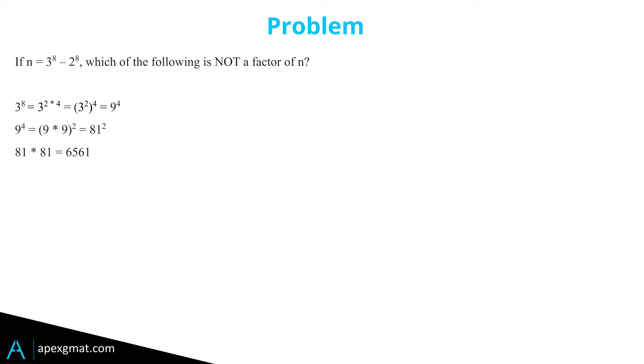Don't expect you to know that. It could be done in 20 seconds on a piece of paper or mentally. And then 2 to the eighth, that one you should know, is 256. 6561 minus 256 is 6305. So now we need to break down 6305 into prime factors.